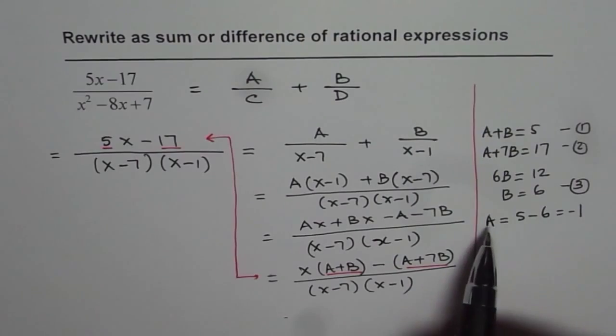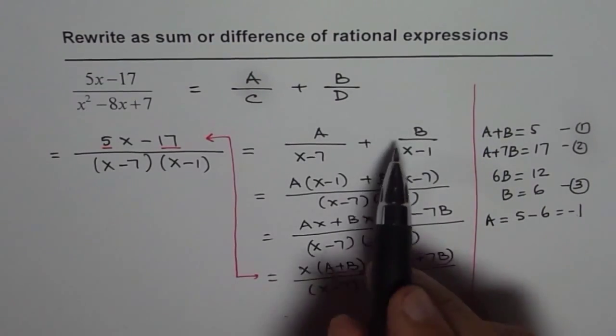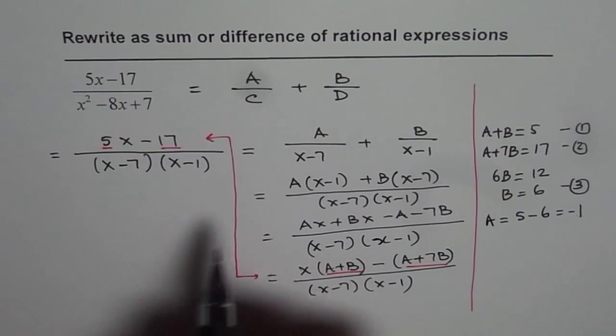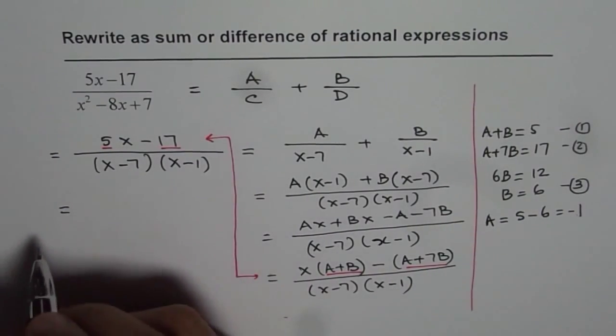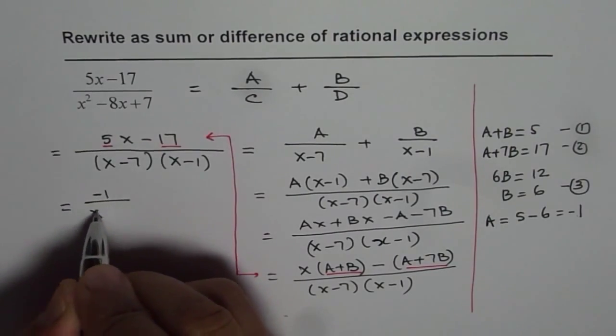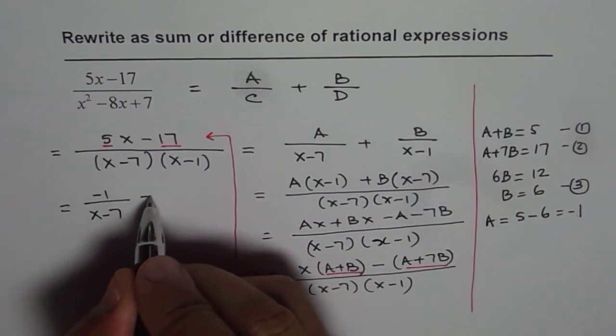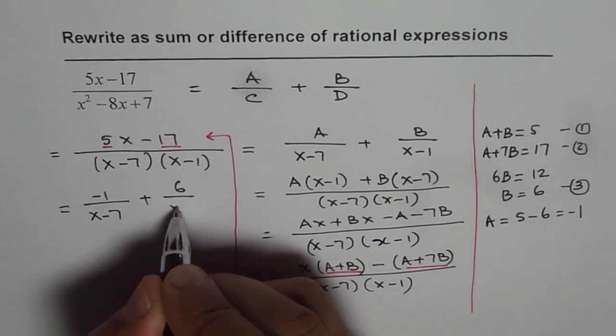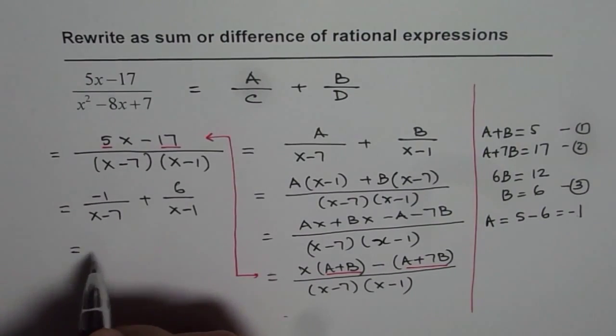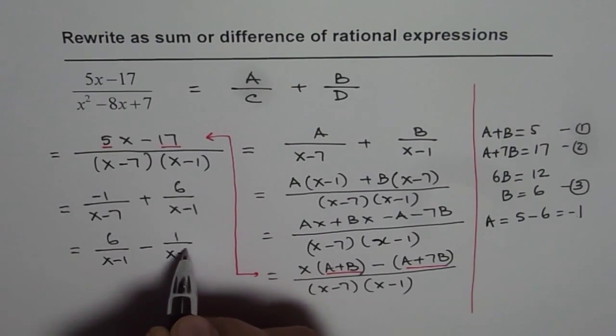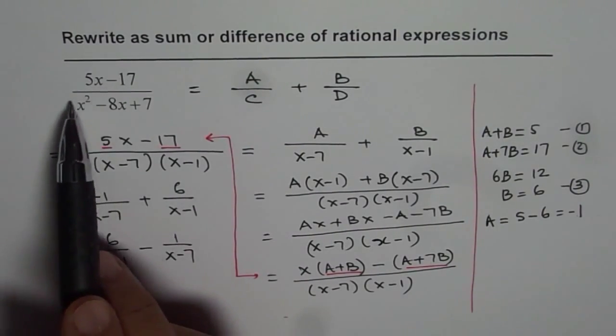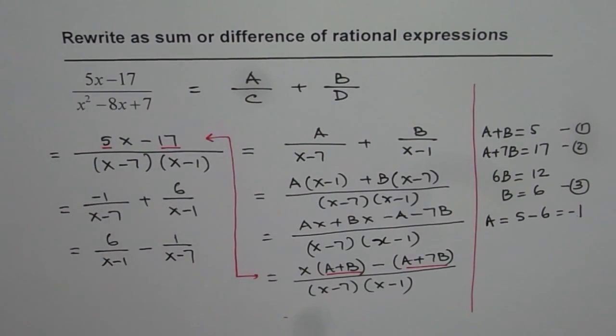What I am trying to say here is, if I substitute a as minus 1 and b as 6 in this equation, it should become equivalent to the given expression. Let us try it out. So it becomes minus 1 over x minus 7 and b as 6, so we get plus 6 over x minus 1. Now what I am trying to say is that the expression 6 over x minus 1 minus 1 over x minus 7 is same as 5x minus 17 divided by x squared minus 8x plus 7. And that is how we can write a rational expression as sum or difference of rational expressions.